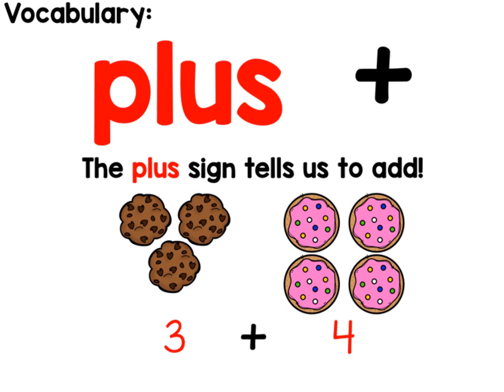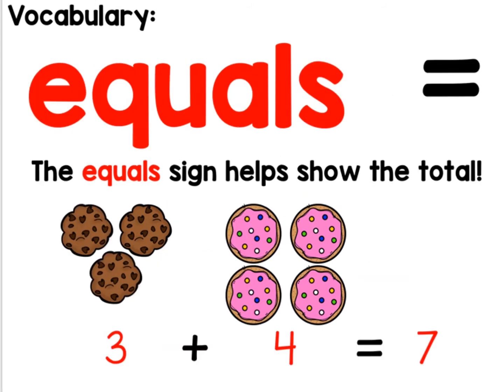Plus - the plus sign tells you to add. That symbol means plus. Equals - the equals sign helps show the total. Three plus four equals seven. It also means the same as.